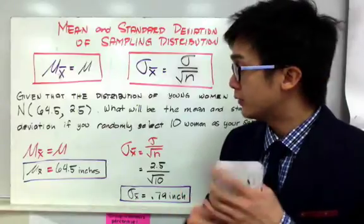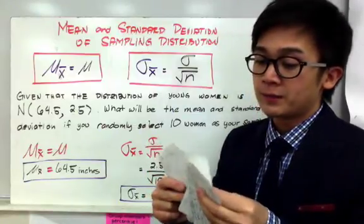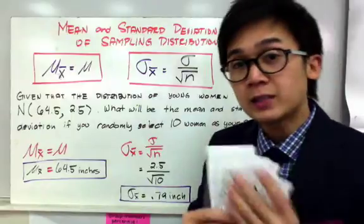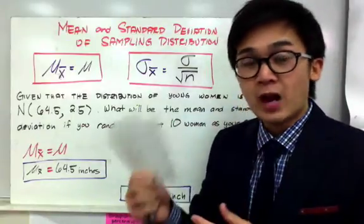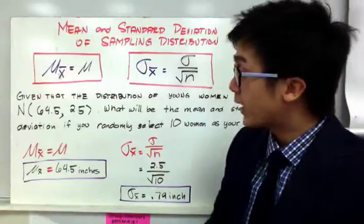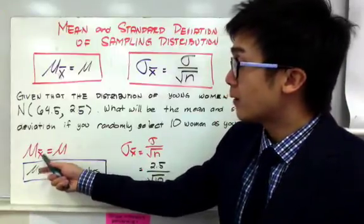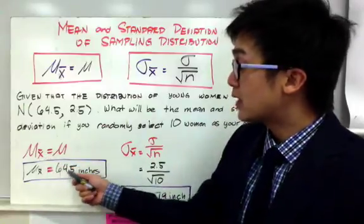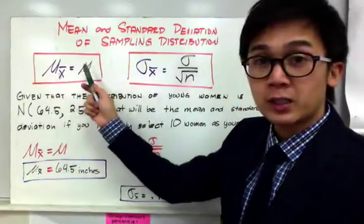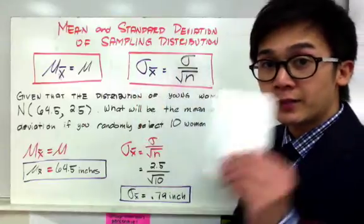Let's say this is our pool of young women, and we are going to record their height. We have 10 randomly selected women, and we're going to find their height, collect the data set, and find the estimated sample mean and standard deviation. Based on the formula, without actually looking at all the heights, we know the estimated sample mean for these 10 samples will be 64.5 inches, because the estimated sample mean equals the population mean due to the central limit theorem.